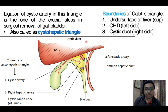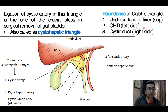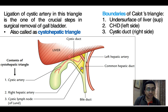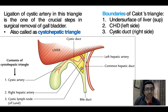In detail, this schematic diagram labels Calot's triangle, also known as the cystohepatic triangle. Its boundaries are: superiorly the under surface of the liver, on the left the common hepatic duct, and on the right the cystic duct. The contents of the cystohepatic triangle or Calot's triangle are the cystic artery, the right hepatic artery, and the cystic lymph node of Lund.